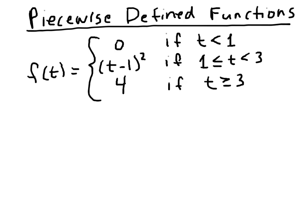In this video, we're going to look at writing single expressions for piecewise defined functions. We'll work with the function f of t, which has value 0 if t is less than 1, value t minus 1 squared if t is between 1 and 3, and value 4 after that.